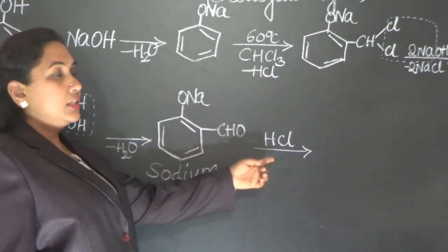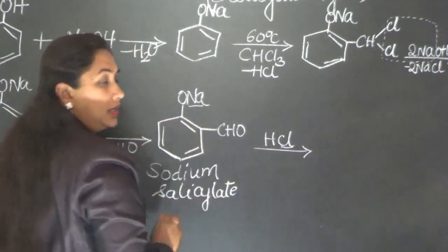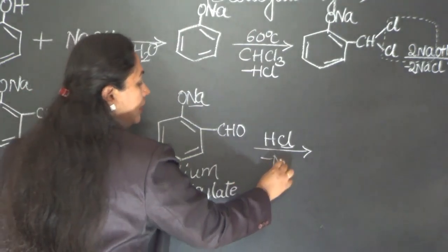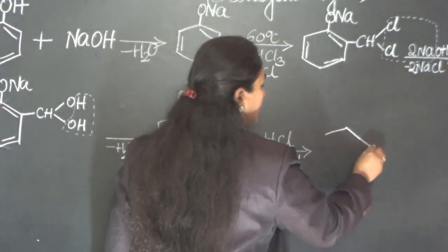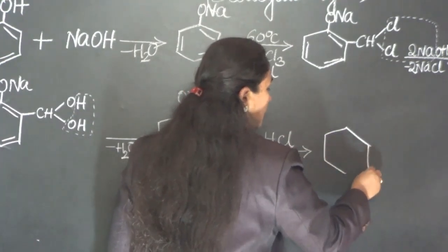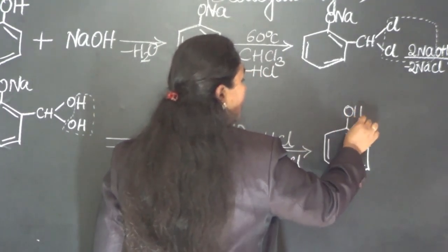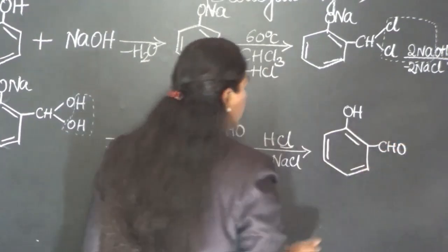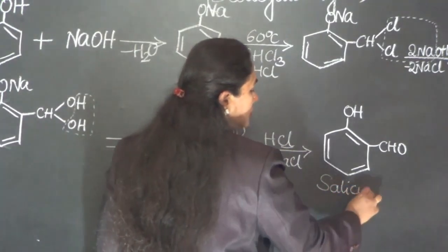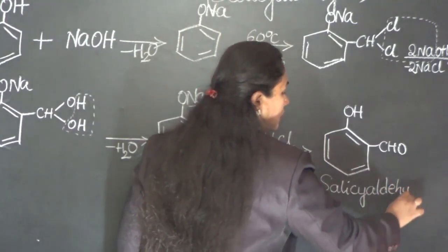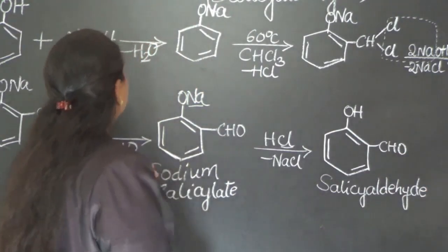Sodium salicylate is acidified with HCl. The Na from sodium phenate reacts with Cl of HCl and comes out as NaCl, and in place of Na, an H takes attachment, converting the ONa group to OH. This compound is salicylaldehyde, and thus we land up in the formation of salicylaldehyde starting from phenol.